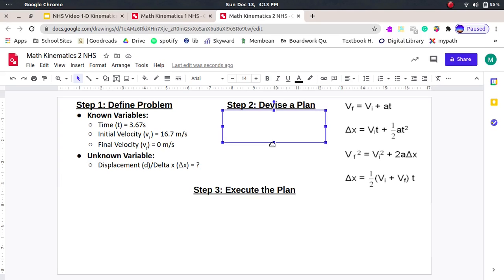Okay, step two is to then devise a plan. So let's look at these equations here and see which one we can use. Can we use Vf? We know that. Vi, we know. But A, we don't know. So we can't use that equation, the first one.